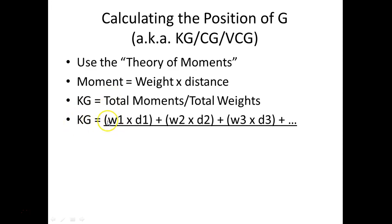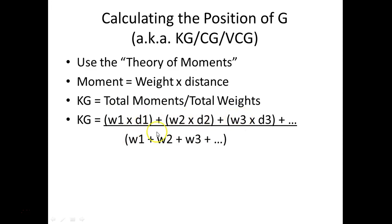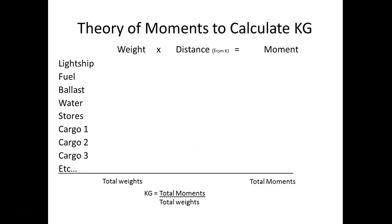Say I have weight one, and that weight is a certain distance from the keel — that's distance one — that makes a moment. And say we have a second weight at a certain distance from the keel — that is another moment. On a container ship you could have thousands of containers; you'd have to calculate the weight of each one. If we summed all the moments and divided all those moments by all those individual weights, including the light ship, we could calculate KG.